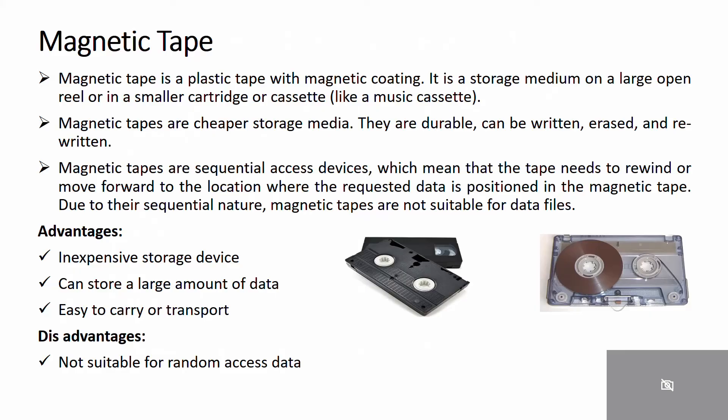Because magnetic tapes are sequential access devices, the tape needs to be rewound or fast-forwarded to reach the location where requested data is stored. Due to their sequential nature, magnetic tapes are not suitable for random data files. This is similar to a tape recorder — when you want to listen to a specific part of the music, you need to rewind or fast-forward to reach it.